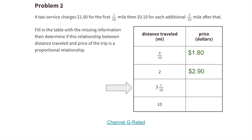When the distance traveled is 3 and 1-tenth miles, that's 31-tenths. The first tenth costs $1.00, leaving 30-tenths or 30 dimes, which is $3.00. So $1.00 plus $3.00 equals $4.00 to travel 3 and 1-tenth miles.